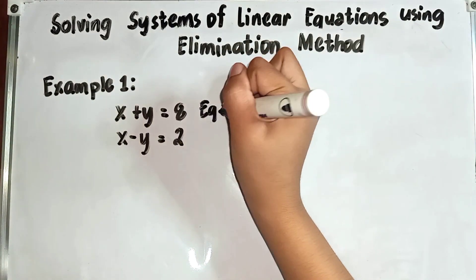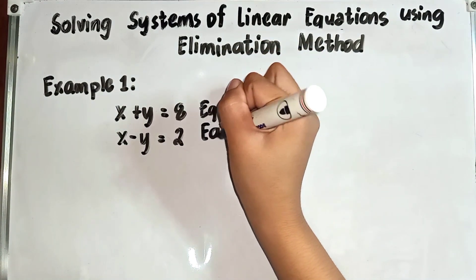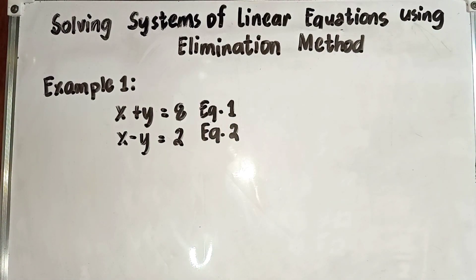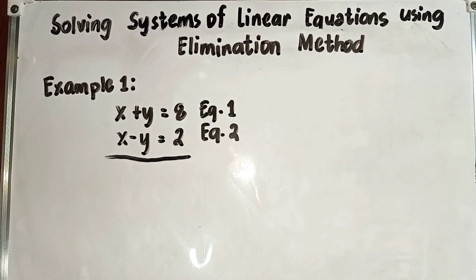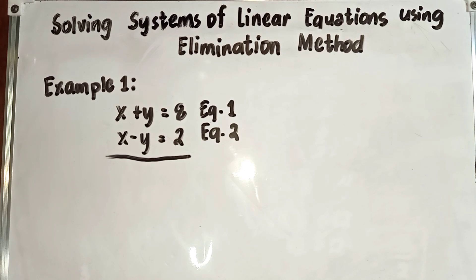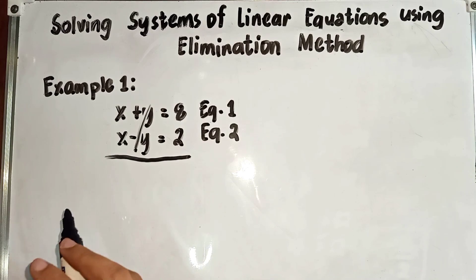We have equation 1 and equation 2. Observe the variables — you will find a variable or numbers that are the same but with unlike signs. This means we are going to eliminate. Since positive y and negative y will equal 0, we need to eliminate the y variable. Since they have unlike signs, what remains is x and x.